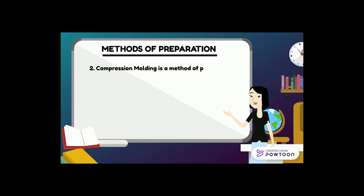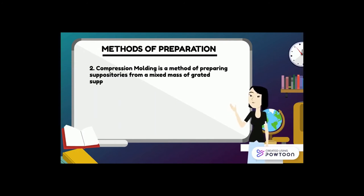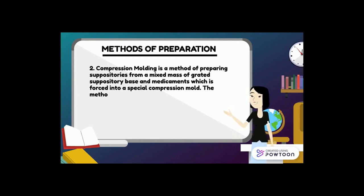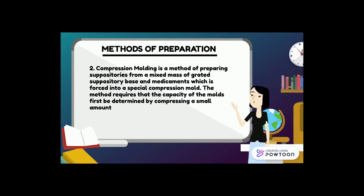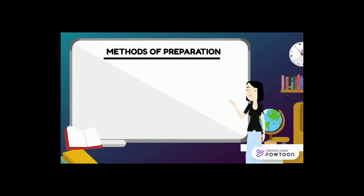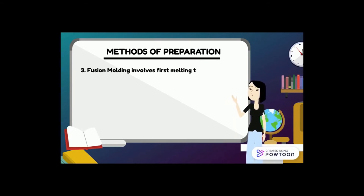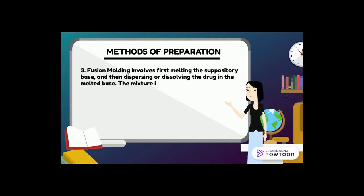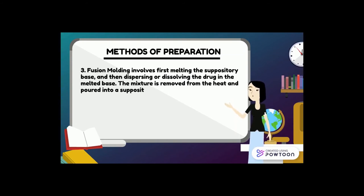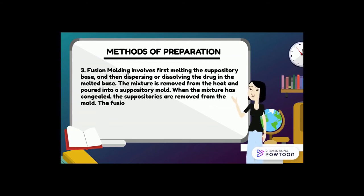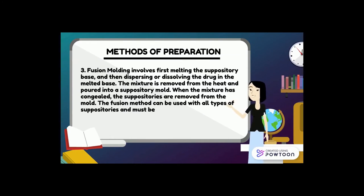Number two, compression molding is a method of preparing suppositories from a mixed mass of grated suppository base and medicament, which is forced into a special compression mold. The capacity of the mold must first be determined by compressing a small amount of the base into the die and weighing the finished suppositories. Lastly, fusion molding involves melting the suppository base, then dispersing or dissolving the drug in the melted base. The mixture is poured into a suppository mold, and when congealed, the suppositories are removed. The fusion method can be used with all types of suppositories.